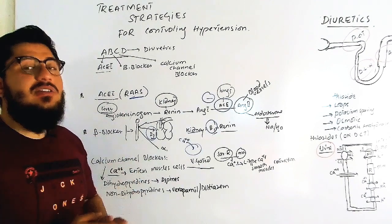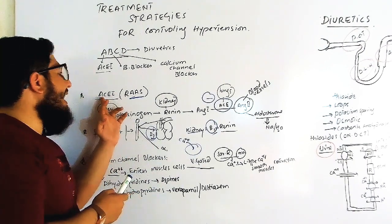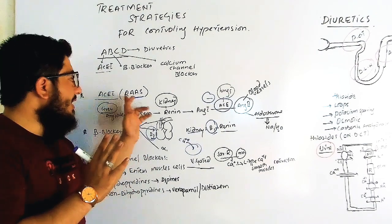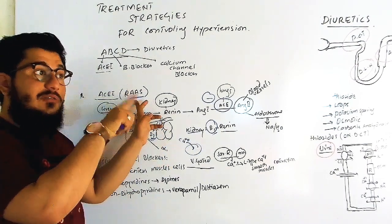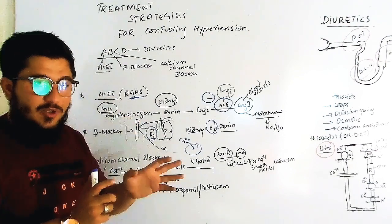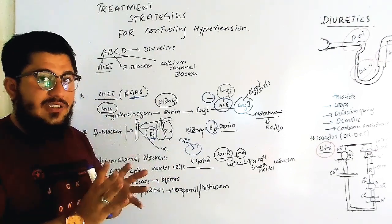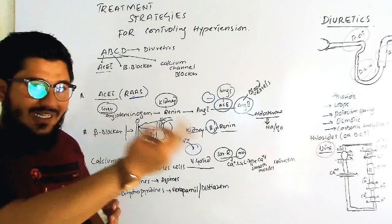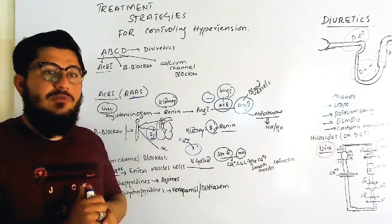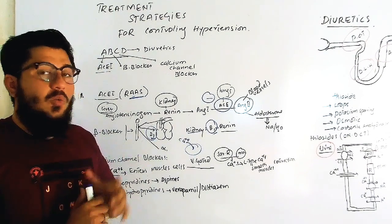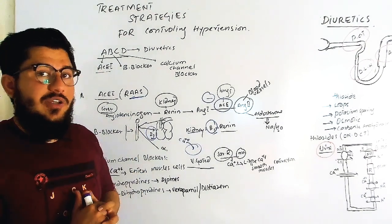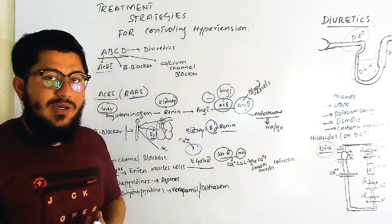What are ACE inhibitors? These are angiotensin-converting enzyme inhibitors. We have learned about the angiotensin-converting enzyme in the RAS system. For complete understanding, go to the CVS playlist on the channel and click on the RAS system video. I will give a short review here.